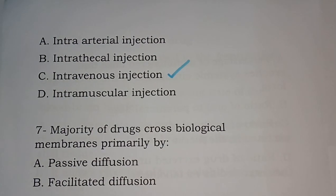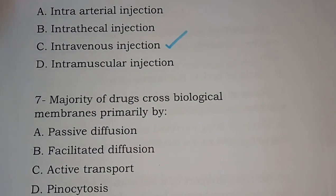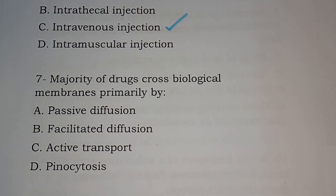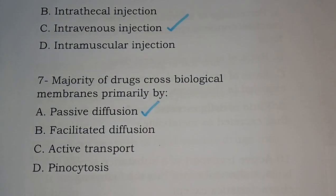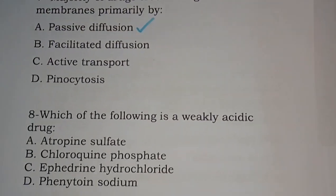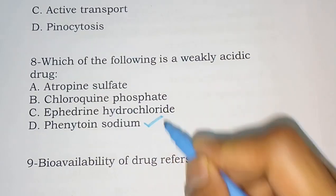Question number seven: majority of the drugs cross biological membranes primarily by — passive diffusion, facilitated diffusion, active transport, pinocytosis. This is an important question. The correct answer is passive diffusion — it is the major method by which the majority of drugs cross biological membranes. Question number eight: which of the following is a weakly acidic drug? Atropine, chloroquine, ephedrine, phenytoin. Phenytoin is a weakly acidic drug.